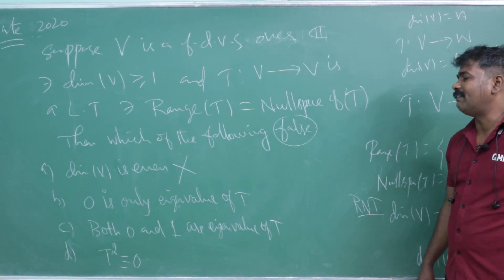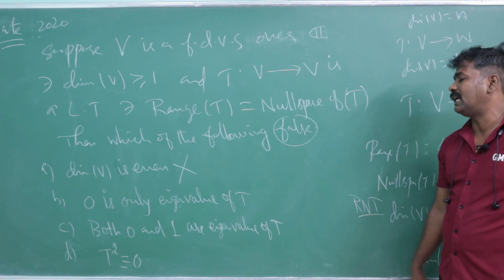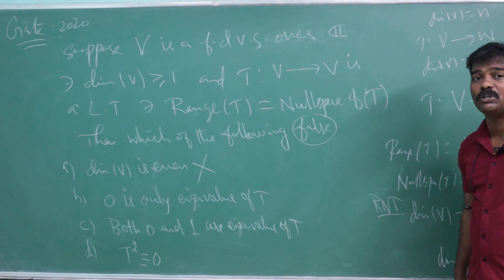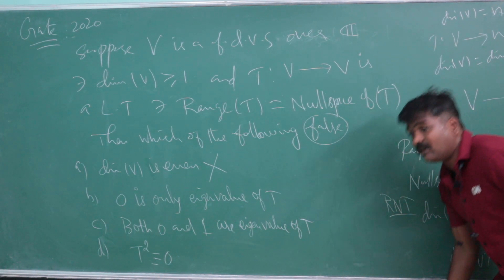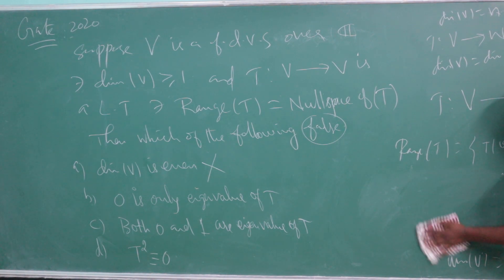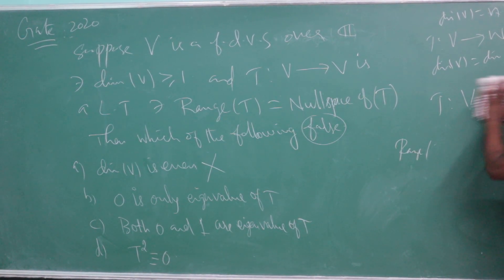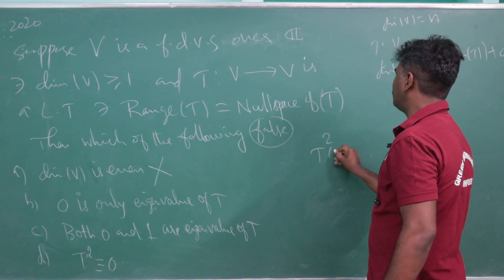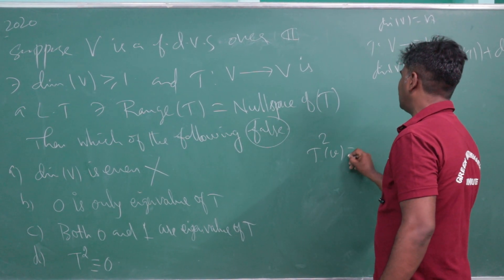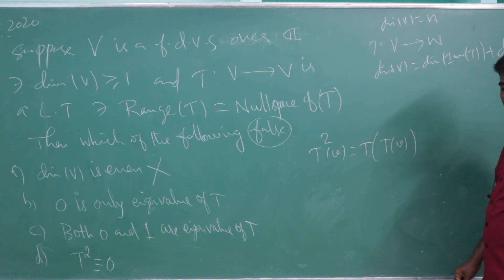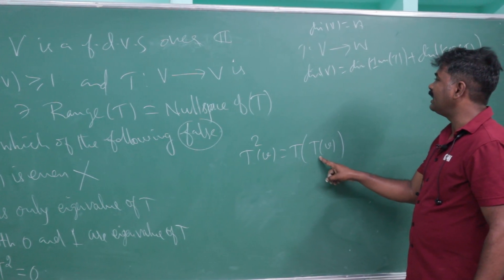The other options are: '0 is the only eigenvalue', 'both 0 and 1 are eigenvalues of T', and 'T² = 0'. Let us analyze T² = 0. T² applied to an element means T(T(v)), where T(v) is in the range of T.